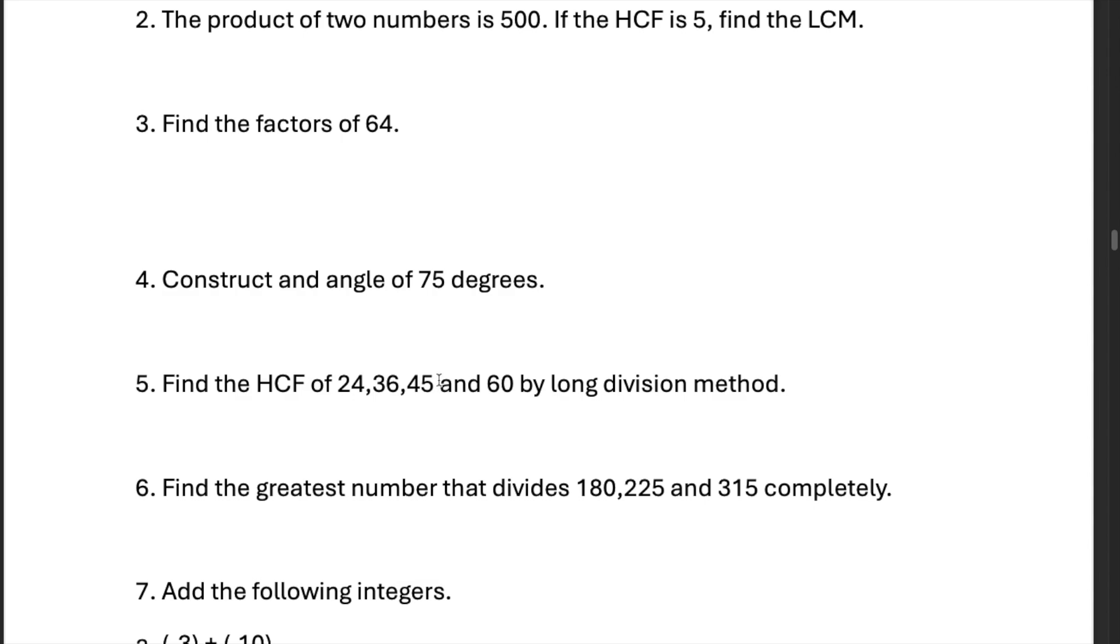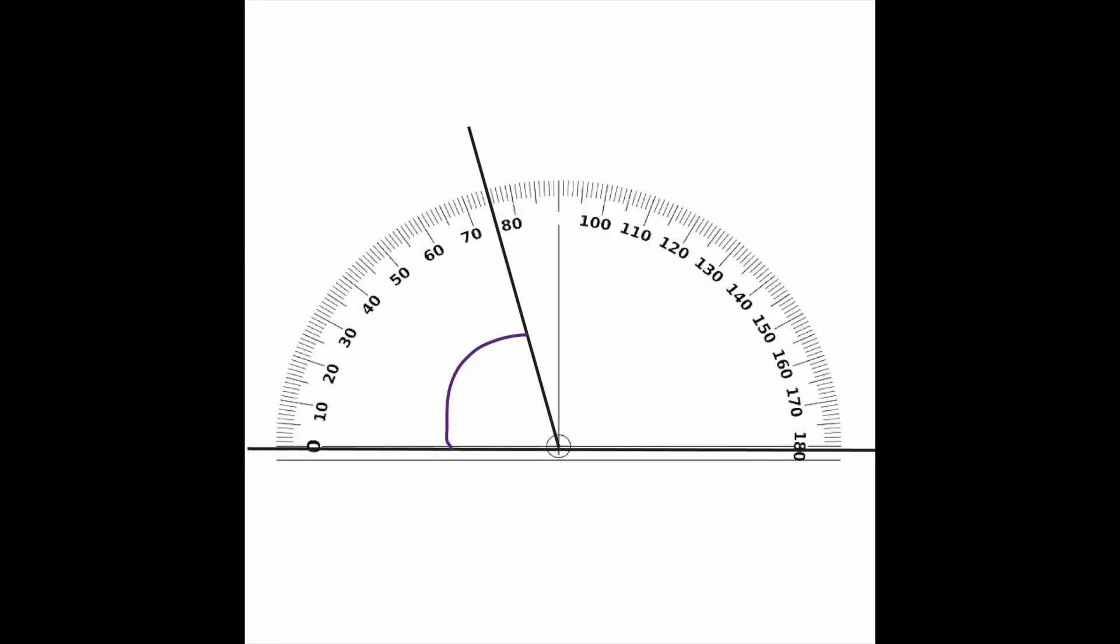Construct an angle of 75 degrees. Use a protractor, draw a straight line from that point in the middle. Mark out 75 degrees, it should be an acute angle, and then you draw the line against it.